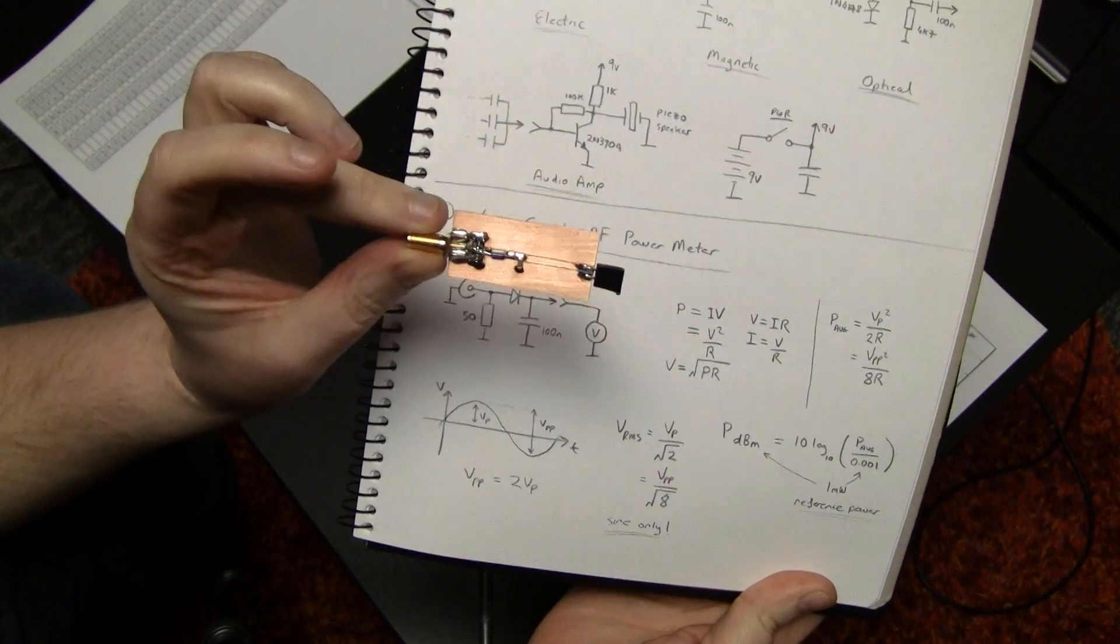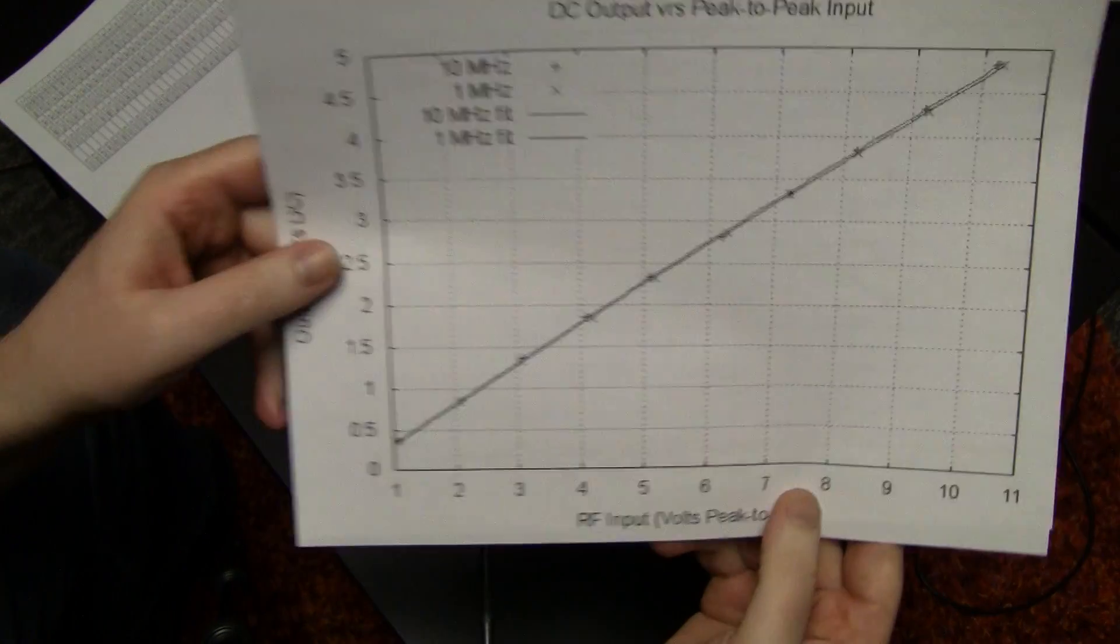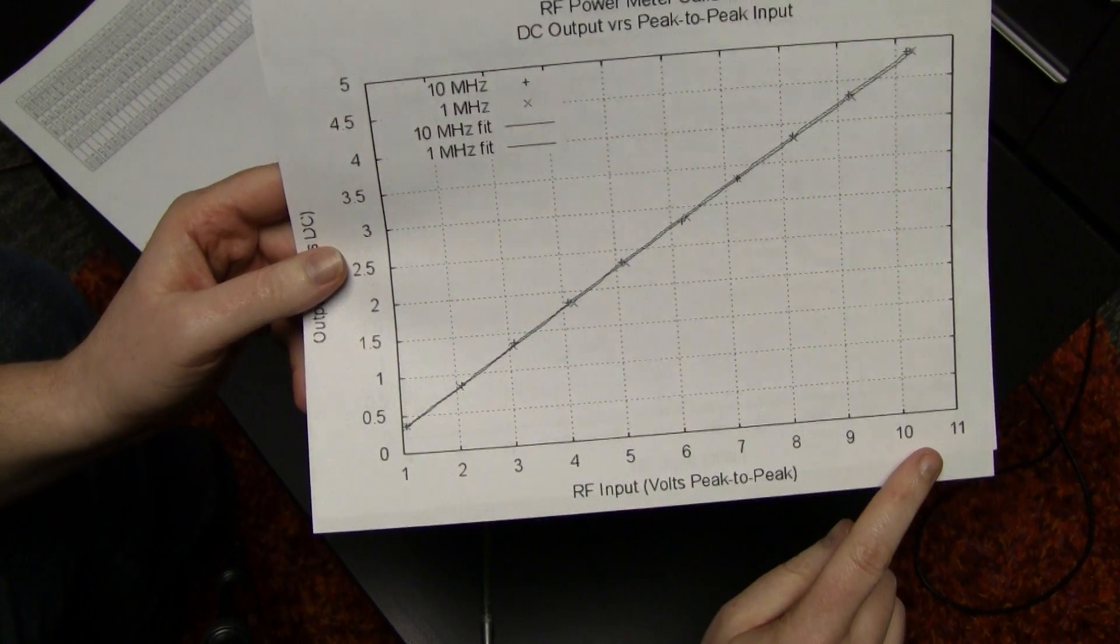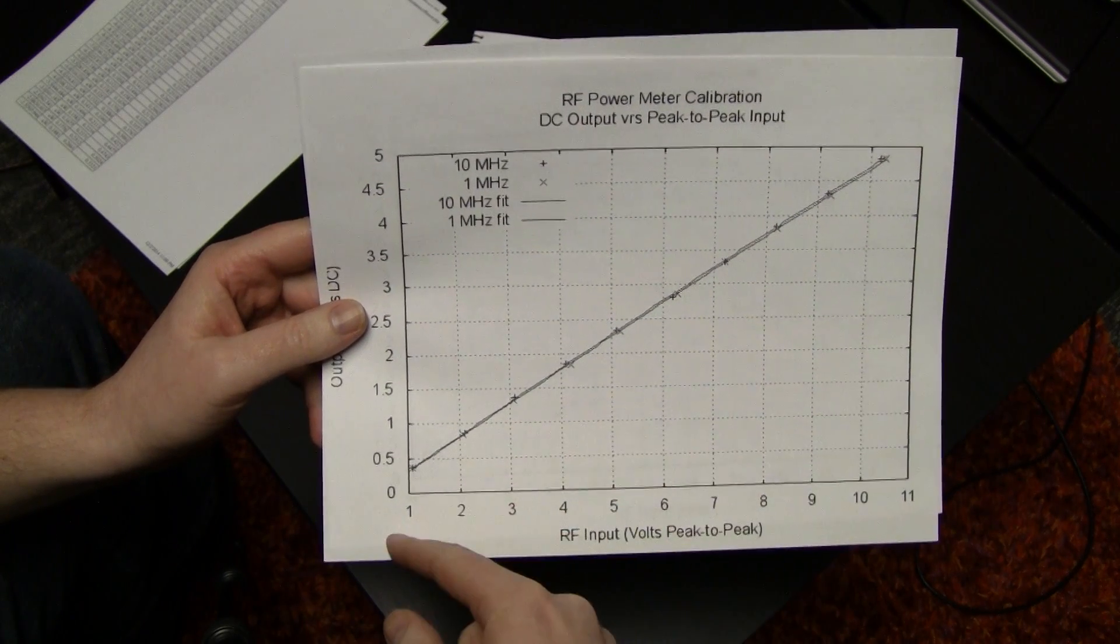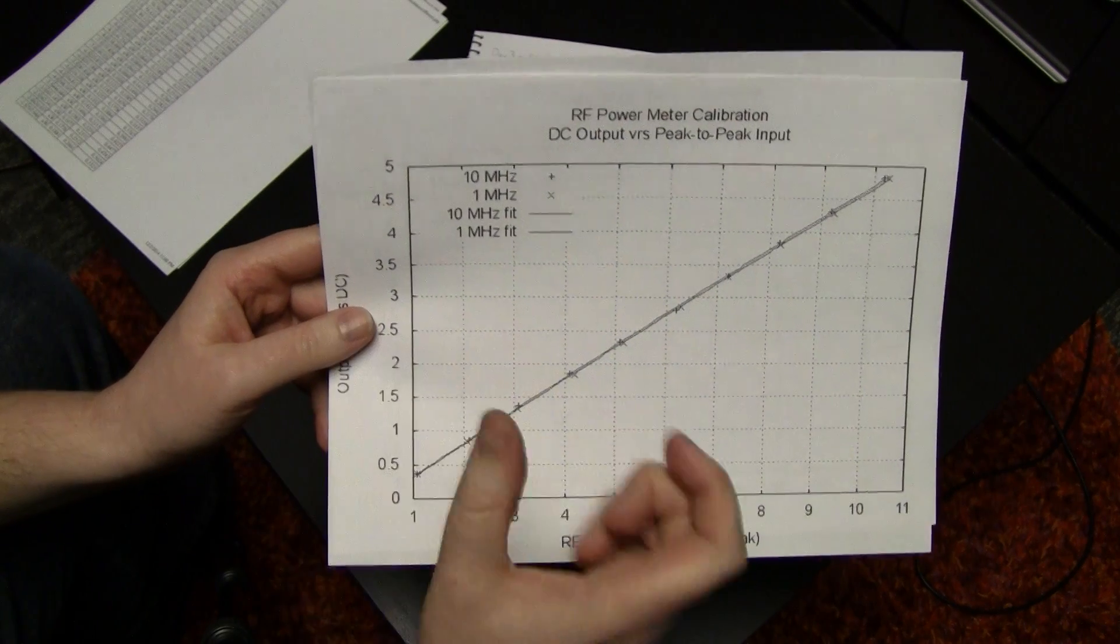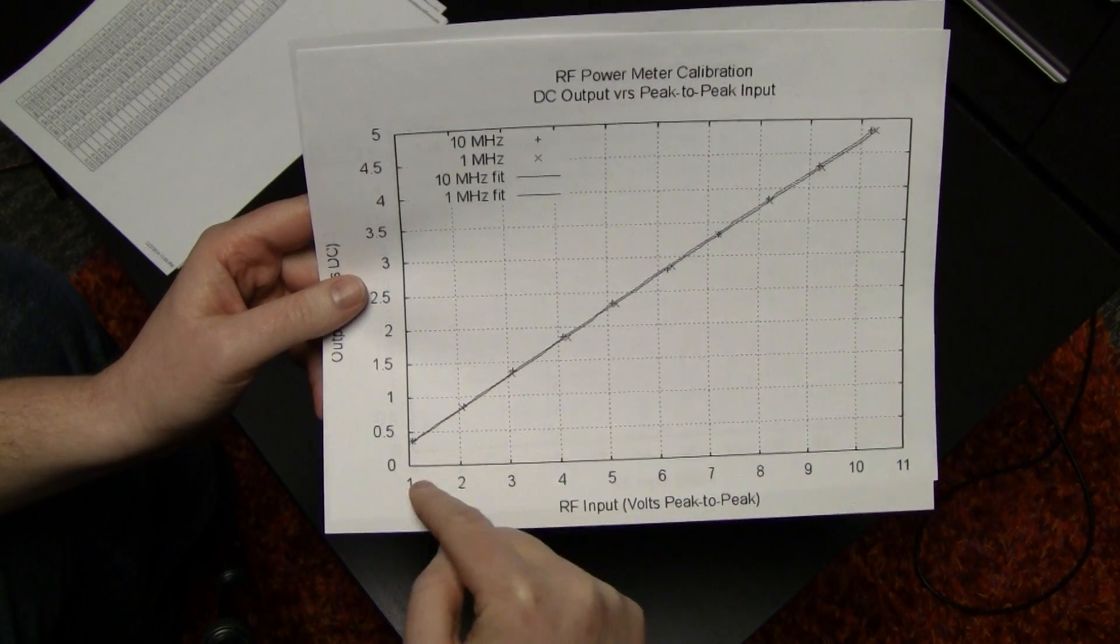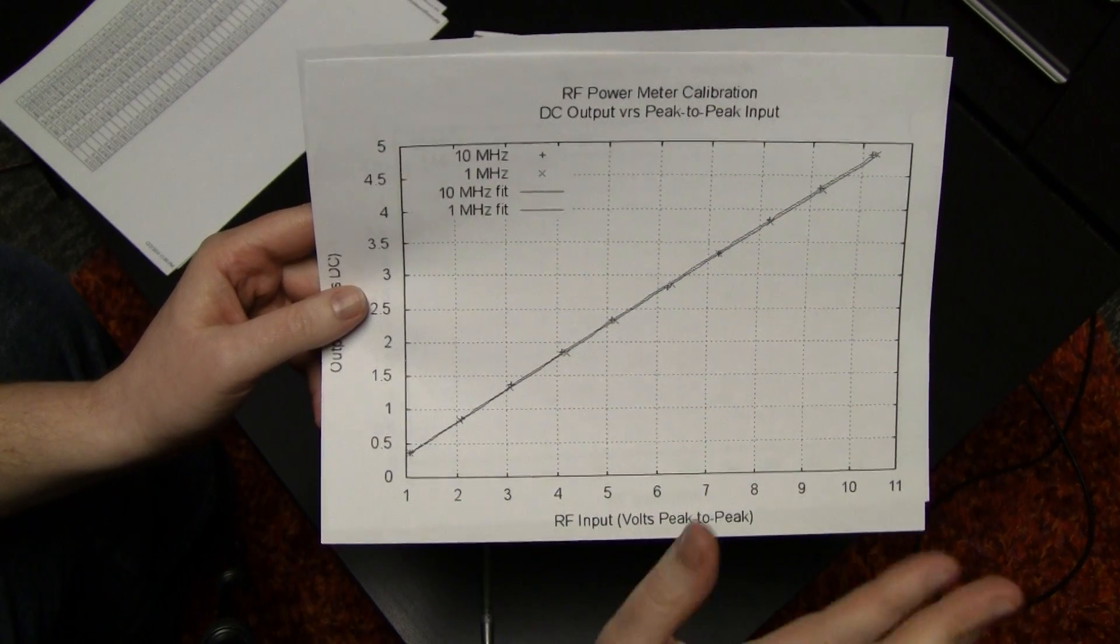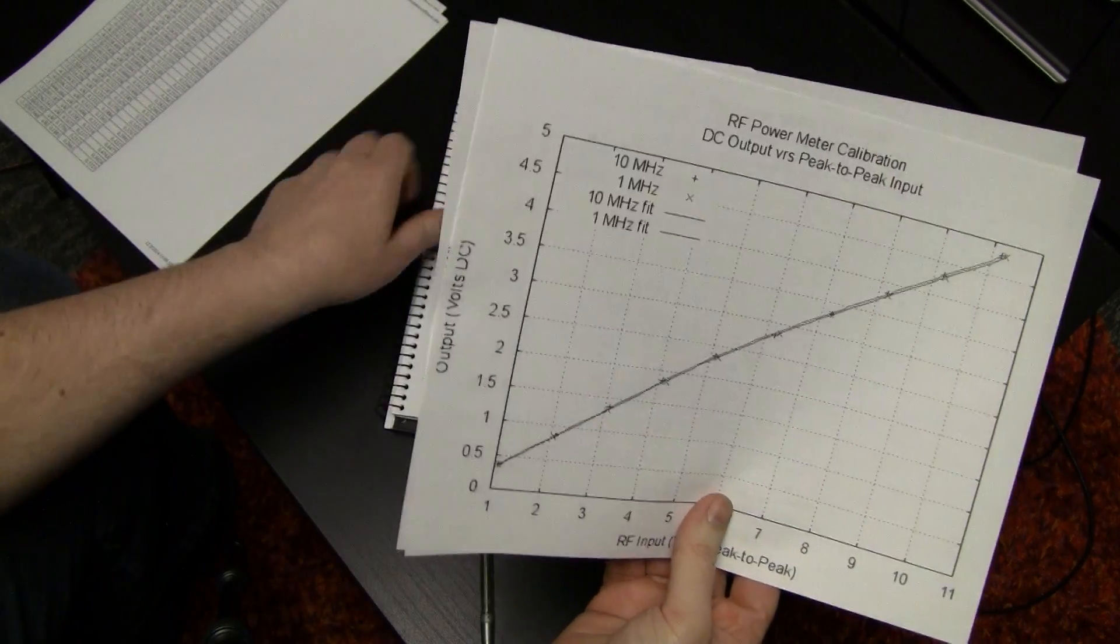So this particular unit I actually spent some time and calibrated it. So what we have here is a measure of the peak-to-peak input voltage that I put in just with a signal source at 1 meg and 10 megahertz, and the output voltage in DC that I saw across the termination capacitor. You can see there's not very much difference between the 1 megahertz and the 10 megahertz. It starts to roll off beyond about 40 megahertz, and there's no input blocking capacitor on the front end. That's kind of an important point.